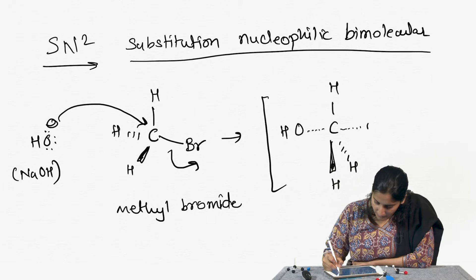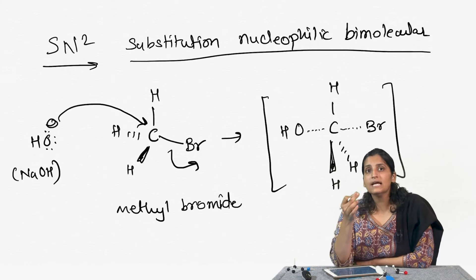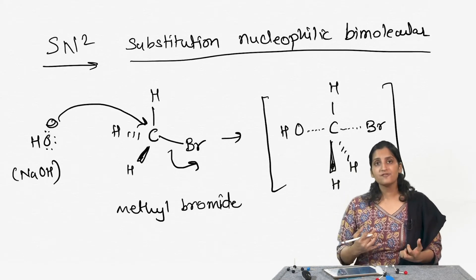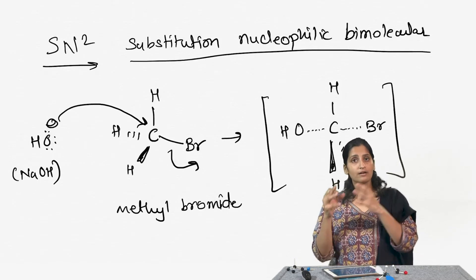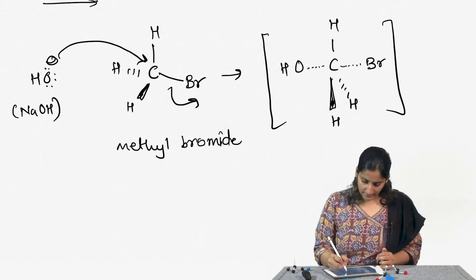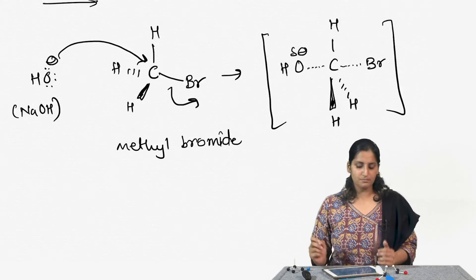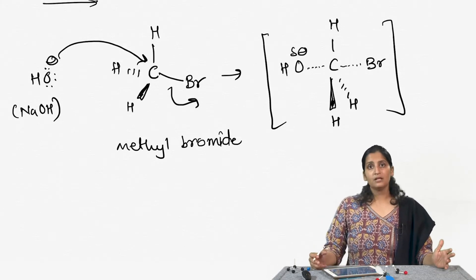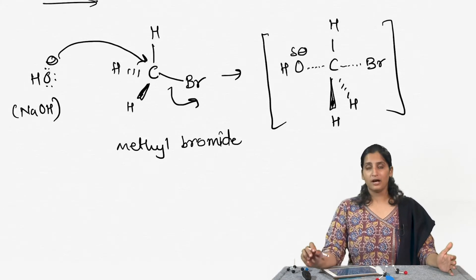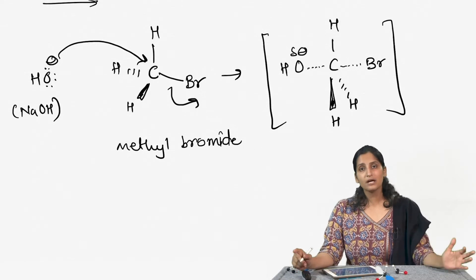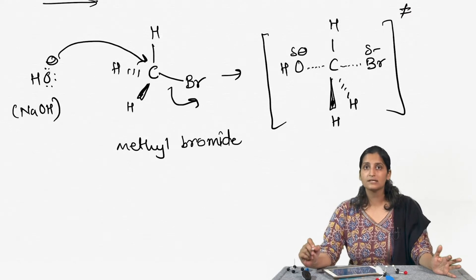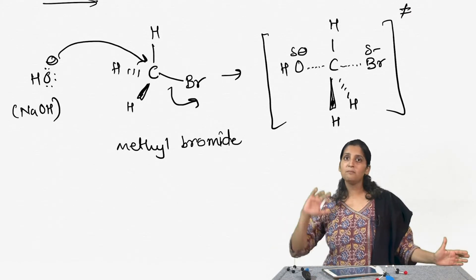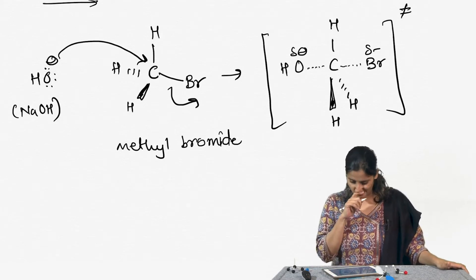At the same time, the bond between carbon and bromine is starting to break. The hydroxide comes in with a full negative charge and slowly starts giving electrons to the carbon, in turn becoming delta negative. The bromine starts breaking the bond with the carbon and becomes slightly delta negative as well. So the transition state has a bond that is partially formed and a bond that is partially broken.